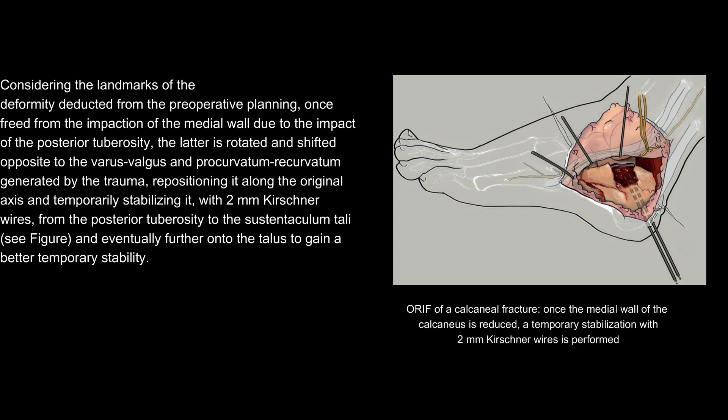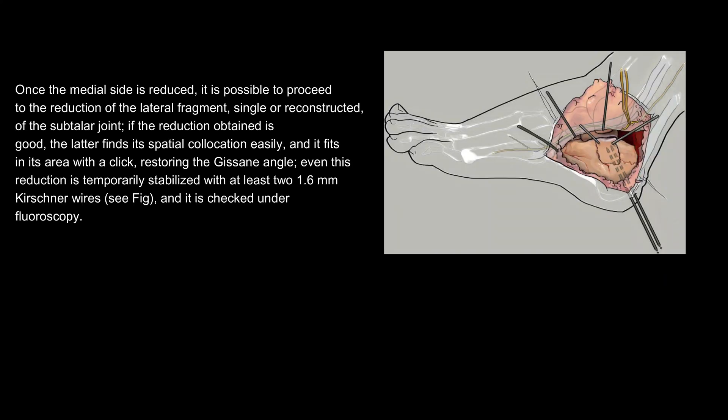ORIF of a calcaneal fracture: once the medial wall of the calcaneus is reduced, a temporary stabilization with 2 mm Kirschner wires is performed. Once the medial side is reduced, it is possible to proceed to the reduction of the lateral fragment — single or reconstructed — of the subtalar joint. If the reduction obtained is good, the latter finds its spatial collocation easily and fits in its area with a click, restoring the Gissane angle.